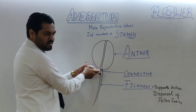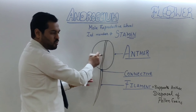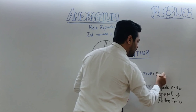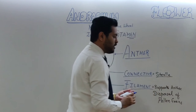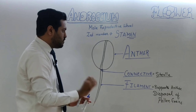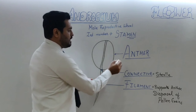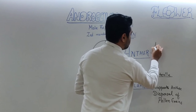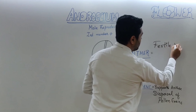The connective is the point of contact between the filament and the anther — it is a continuation part. The connective is considered a sterile part, meaning it does not directly participate in reproduction. The main fertile part of the stamen is the anther.